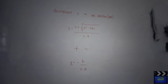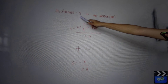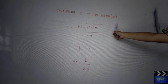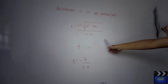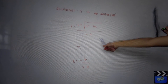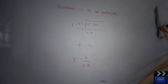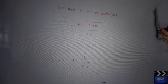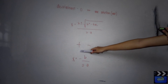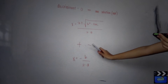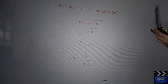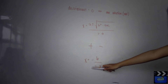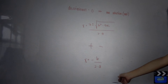If the discriminant is equal to zero, the quadratic equation has one solution. We can still use the same formula, but because the discriminant — the expression under the square root — is zero, it doesn't contribute. The positive or negative doesn't make a difference, so the root is simply x equals negative b over 2a.